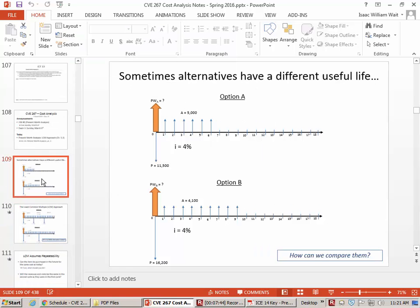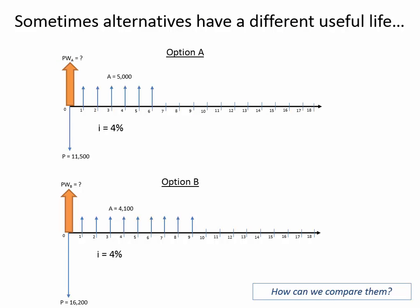Someone asked how you know how many cycles to do of each — it's just something you get with practice. For example, if you had one option that lasts two years and another that lasts six years, you repeat the two-year one three times and don't repeat the six-year option. If it's three and four years, you think about what number of cycles makes them end at the same time — the least common would be 12. It takes a little practice.